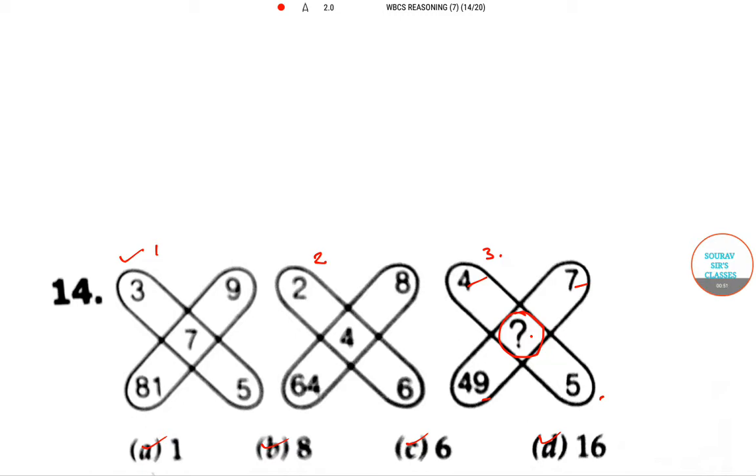So in diagram 1, if we calculate in this type, like 7 - this middle number - plus 5, as is it, 7 plus 5 minus 3 into 9. That means the end result is 81.